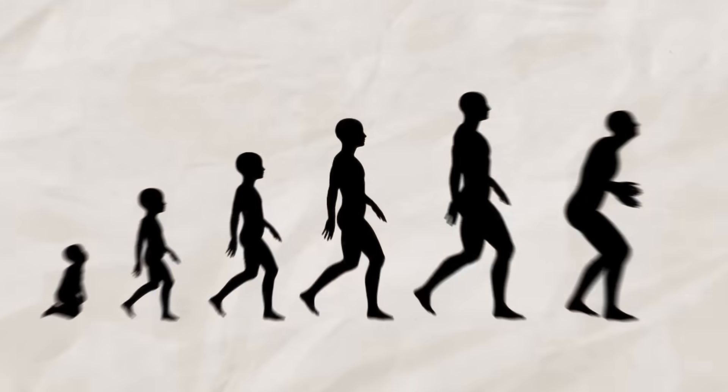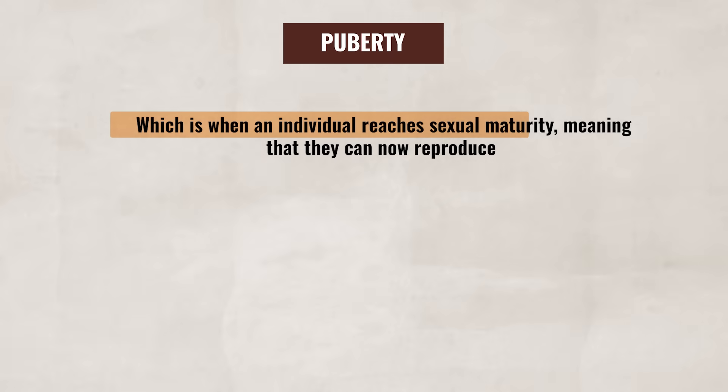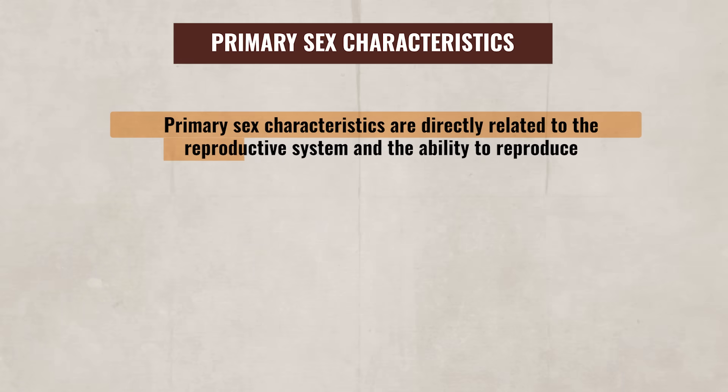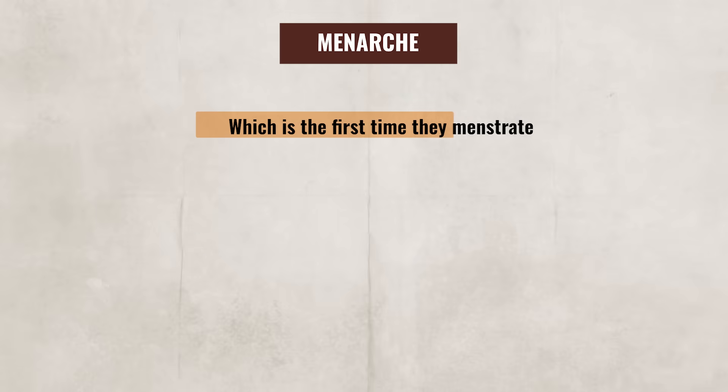Eventually, children move out of their early developmental years and transition into adolescence. During adolescence, individuals experience significant physical, psychological, and emotional changes. Adolescence starts with puberty, which is when an individual reaches sexual maturity, meaning they can now reproduce. The start of puberty brings hormonal changes, more intense emotional swings, and further development of primary and secondary sex characteristics. Primary sex characteristics are directly related to the reproductive system and the ability to reproduce. For girls, this would include the start of menarche, which is the first time they menstruate, and for boys, it would include spermarche, which is the first time that they ejaculate. Both of these milestones indicate that the reproductive organs are maturing and becoming functional.